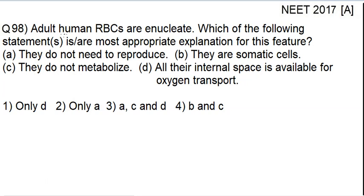Hello students, in this video lecture we will be discussing question number 98 of NEET 2017 question paper. The question is: adult human RBCs are enucleate, that means they lack a nucleus. Enucleate means nucleus is absent. Which of the following statements is or are the most appropriate explanation for this feature?